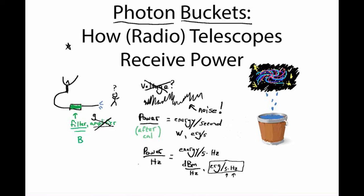So we've removed or at least dealt with the fact that we may have had a gain or amplification in our signal chain, and we've dealt with the fact that we have a filter in our system that controls what bandwidth comes out at the end. But we haven't said anything yet about what our antenna might be.